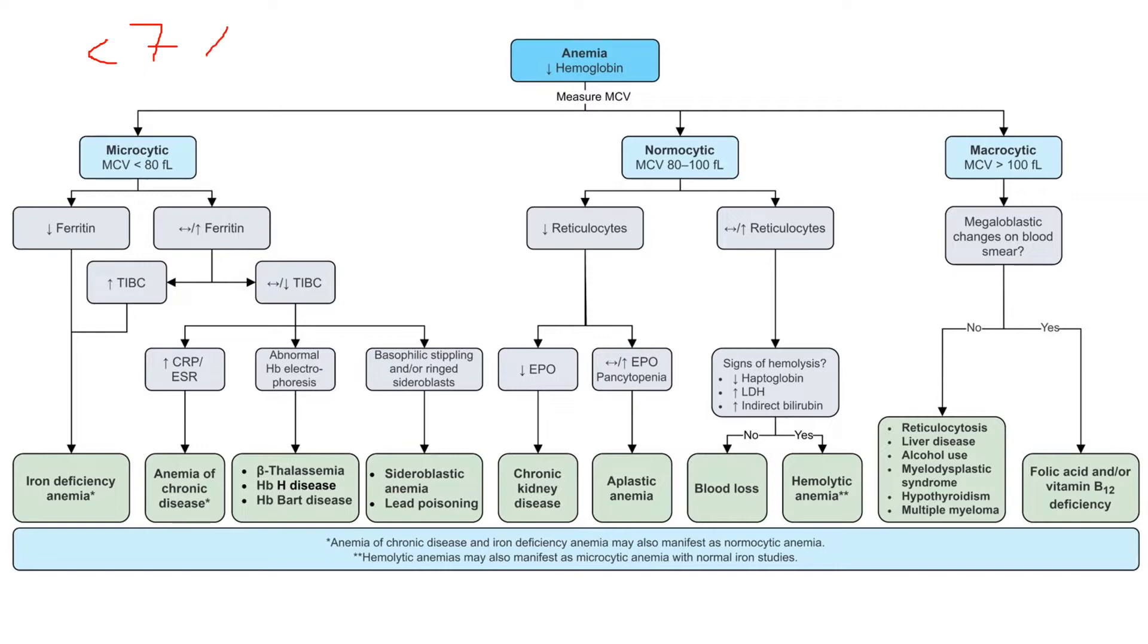Before we start, if your hemoglobin is less than seven or less than eight in someone with cardiovascular risk factors, you transfuse. That's just a quick reminder and review. Make sure you have an active type and screen, make sure you've consented the person for blood so that they can receive it and you can hopefully save their life.